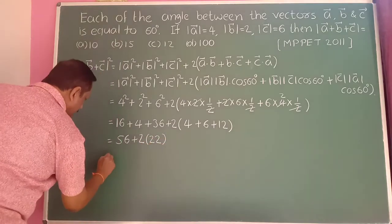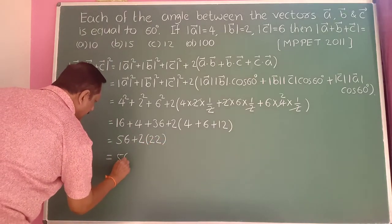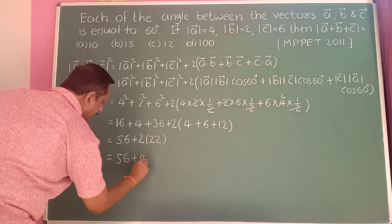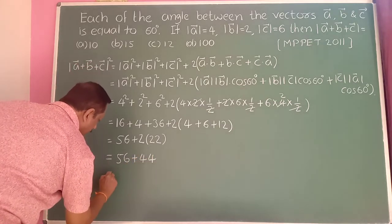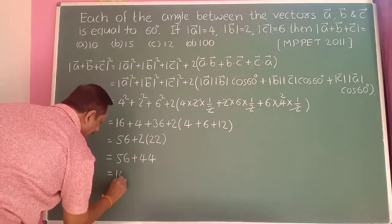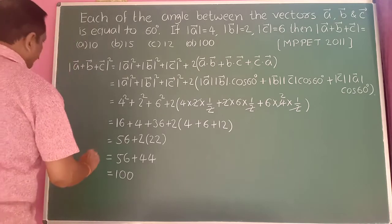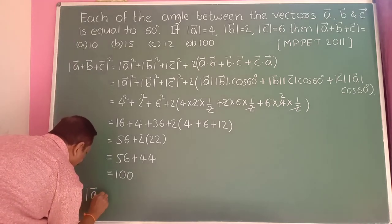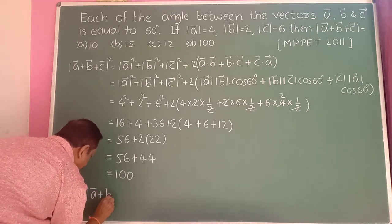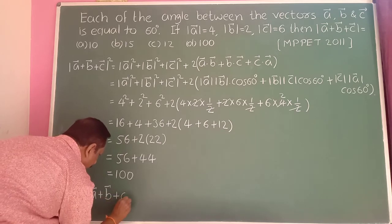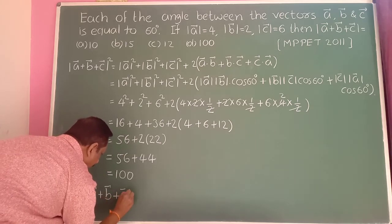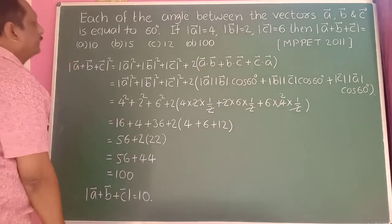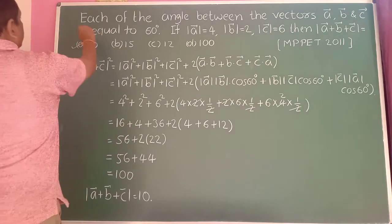Therefore this equals 56 plus 44, which equals 100. So modulus of a-bar plus b-bar plus c-bar equals 10. Therefore the first option is correct.